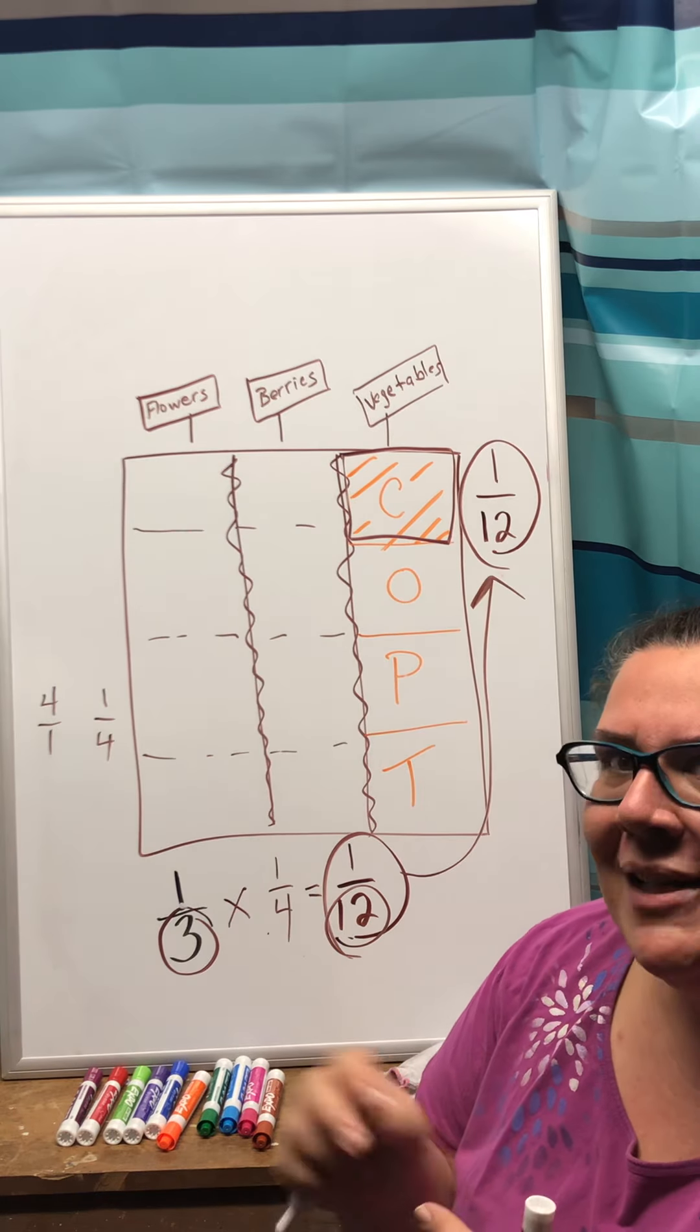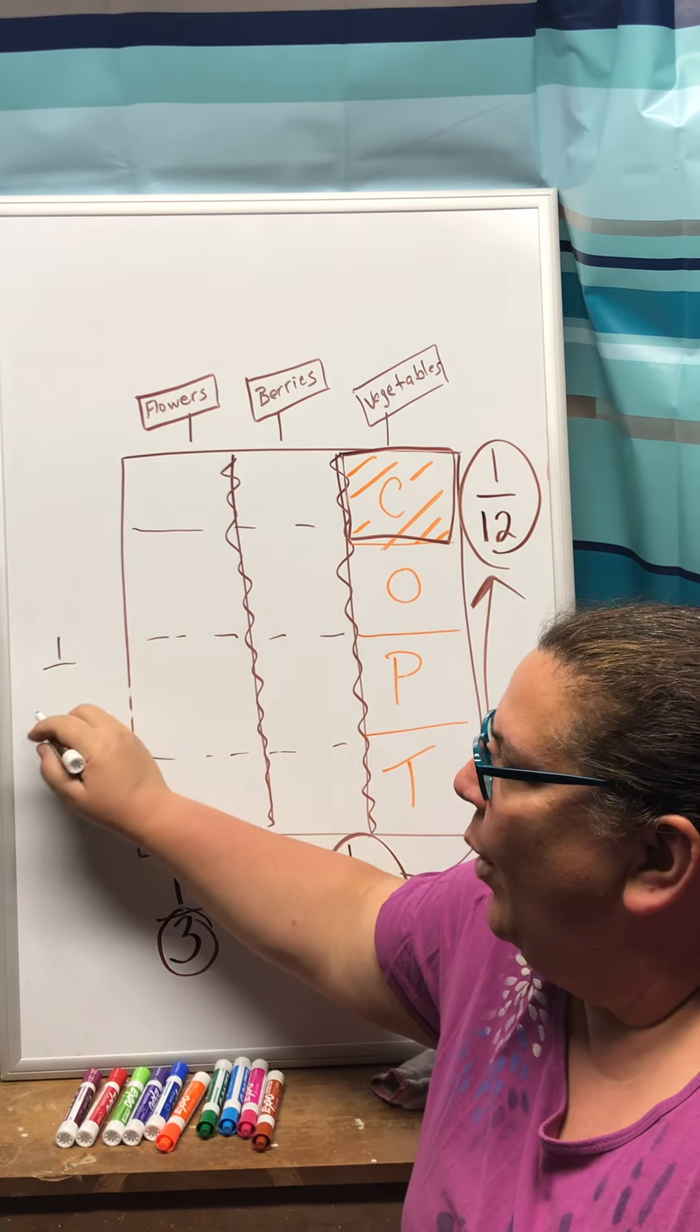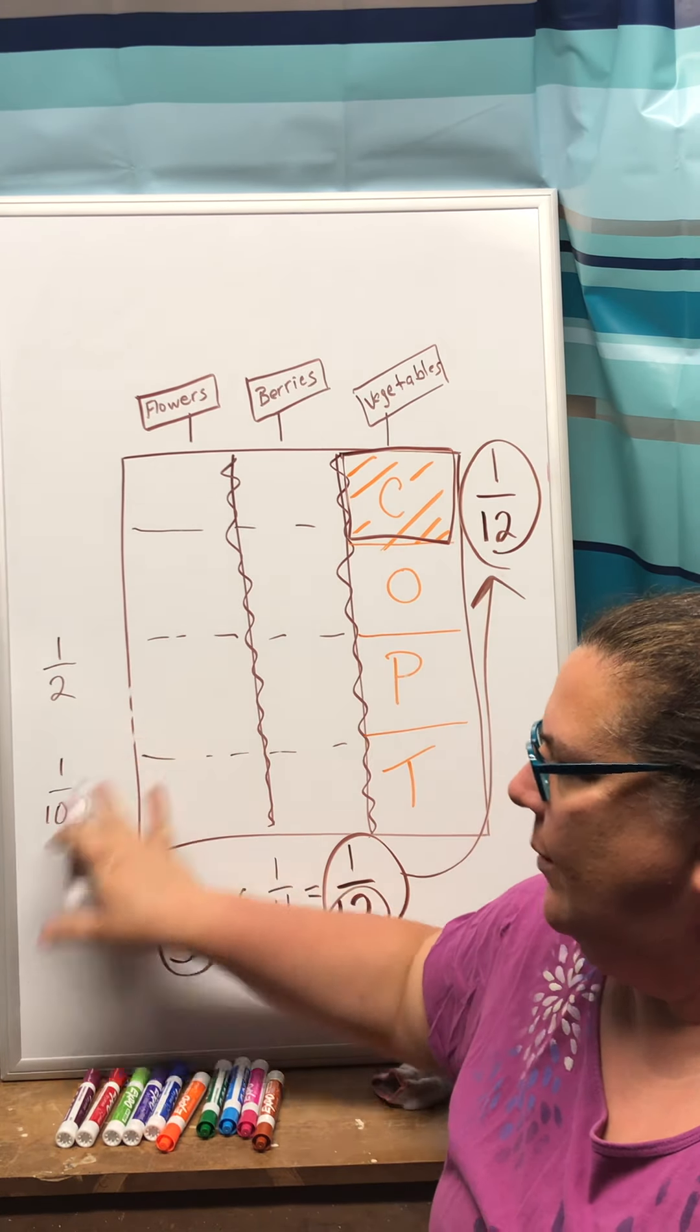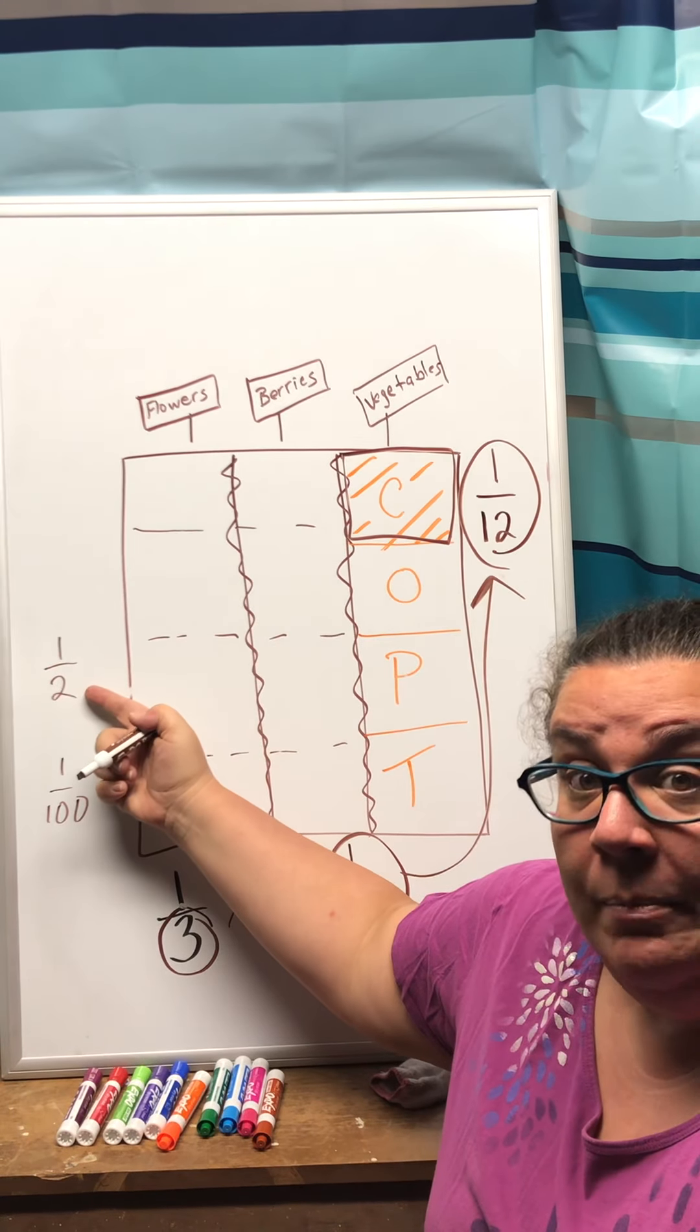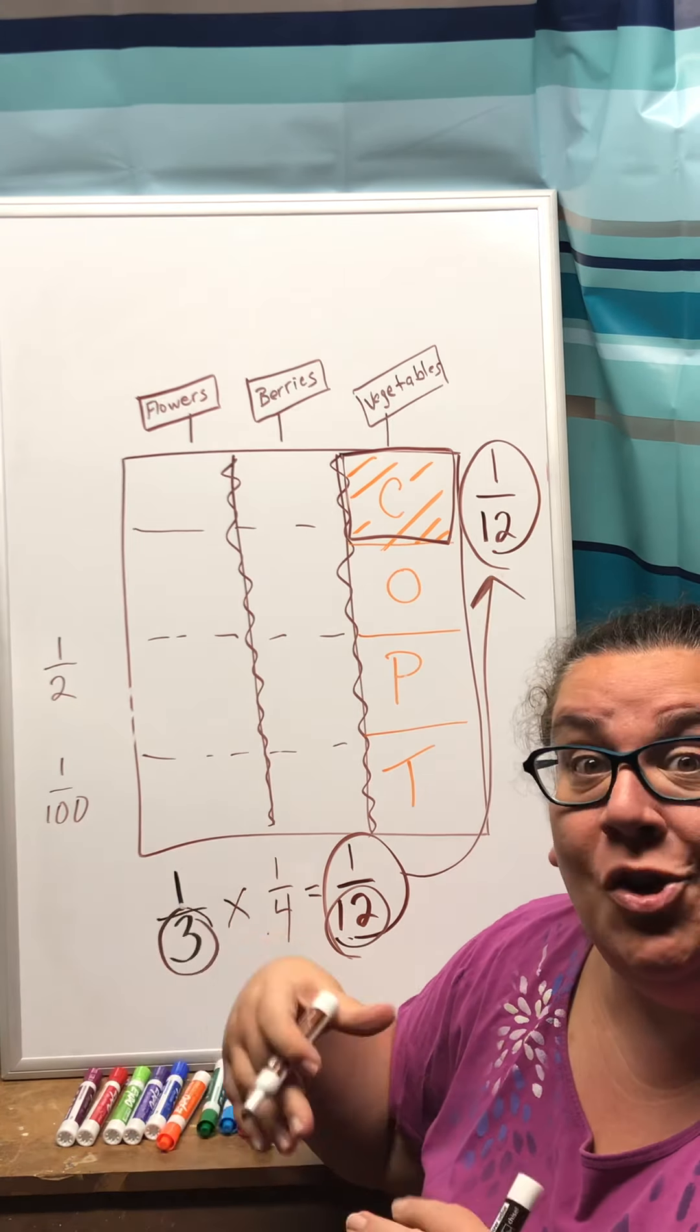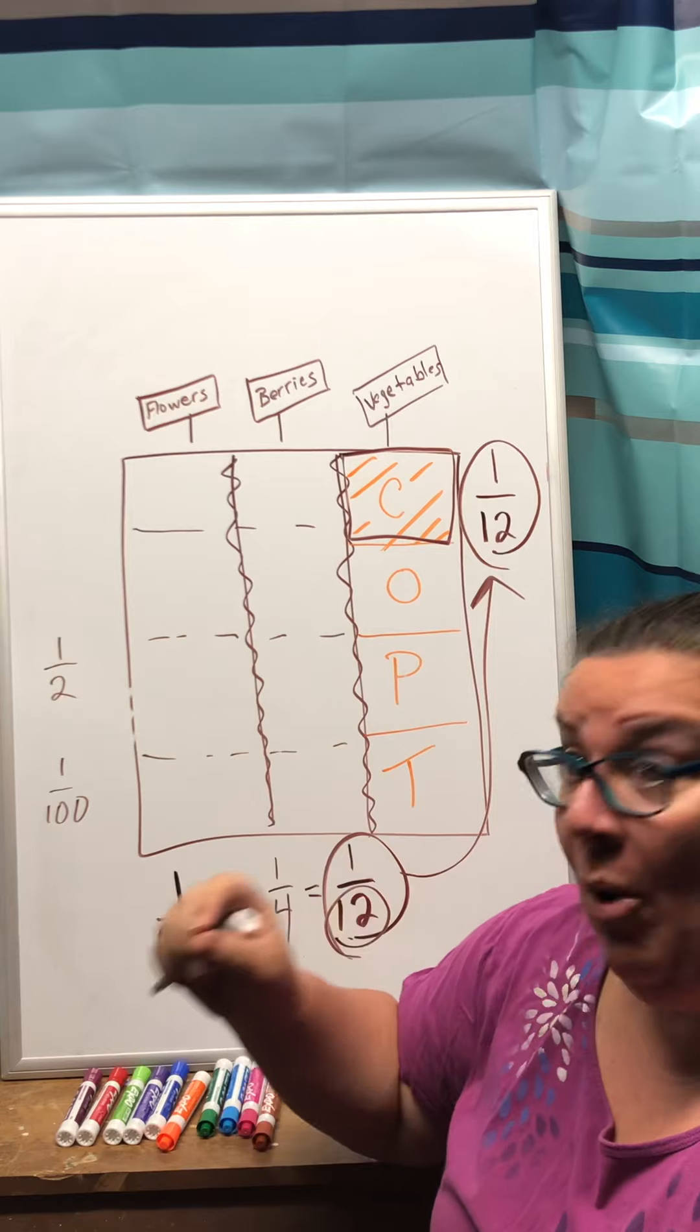Because remember when we first learned about fractions we say would you like 1/2 of a candy bar or would you like 1/100th of a candy bar. Well if you really want candy and you really like candy bars you would rather have this one because the candy bar's cut into two pieces and you're getting one of the two. Over here the candy bar's cut into a hundred pieces and you're only getting one tiny little square of that. So bigger the denominator smaller the piece.